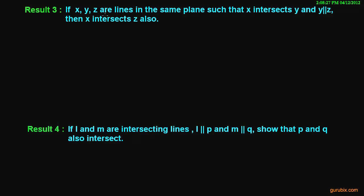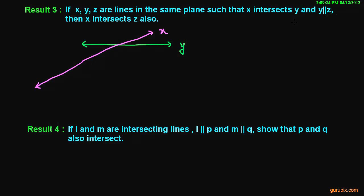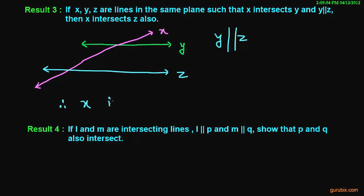Result number three: if X, Y, Z are lines in the same plane such that X intersects Y, and Y is parallel to Z, then X intersects Z also. You can see here that line X intersects line Z. So this is result 3.